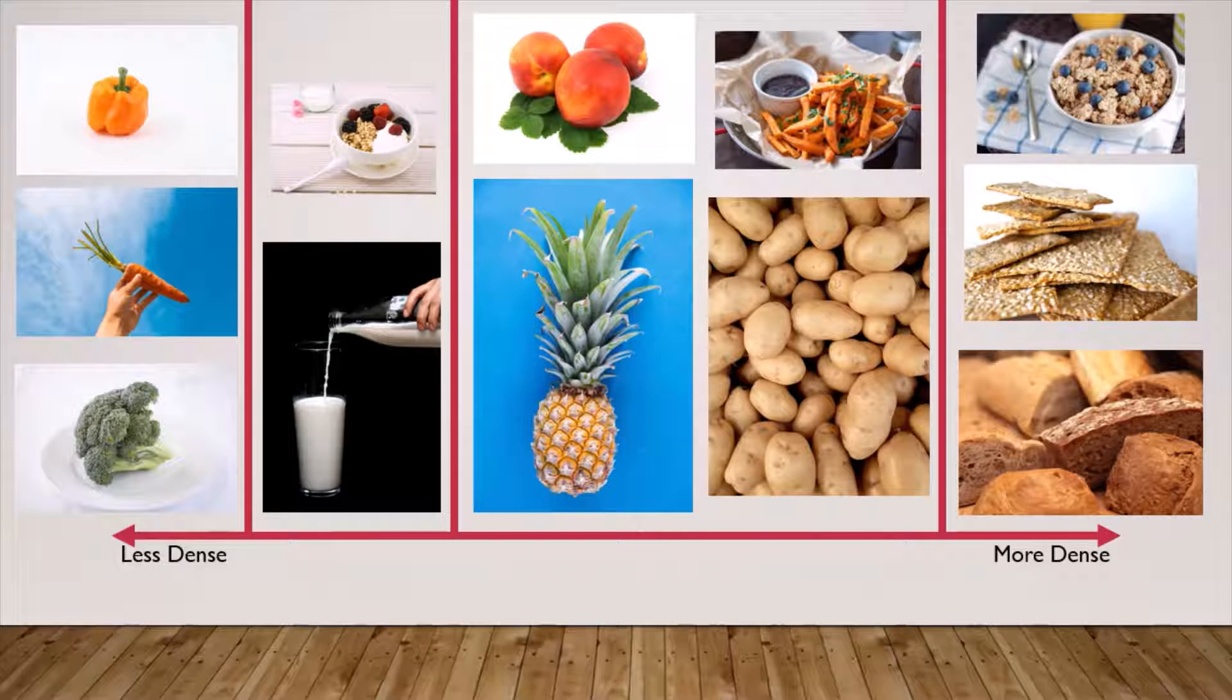Here are all our carb-containing foods laid out in order of carb density. Starting on the low end, we have non-starchy vegetables: things like broccoli, green beans, lettuce, tomatoes, cucumbers, carrots, yellow squash, zucchini, asparagus, onions, celery, and many others. These kinds of vegetables only contain five grams of carbohydrates per serving. A serving being a half cup cooked or one cup raw. That may sound like a lot, but believe me, no one is eating enough vegetables for it to count towards significant carbs.